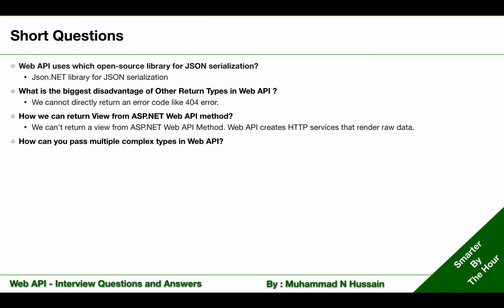How can you pass multiple complex types in WebAPI? We can use ArrayList and NewtonSoft array to pass multiple complex types in WebAPI.